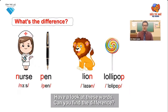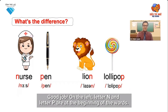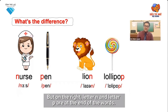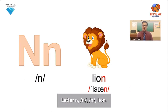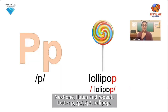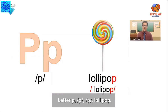Have a look at these words. Can you find the difference? Good job. On the left, letter N and letter P are at the beginning of the words. But on the right, letter N and letter P are at the end of the words. Now listen and repeat. Letter N. N. Lion. Next one. Listen and repeat. P. P. Lollipop.